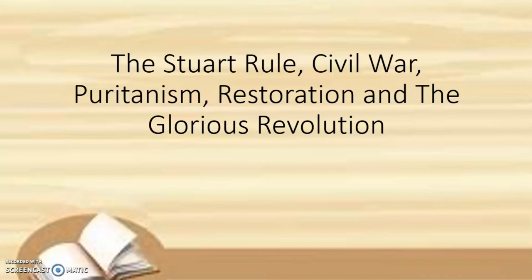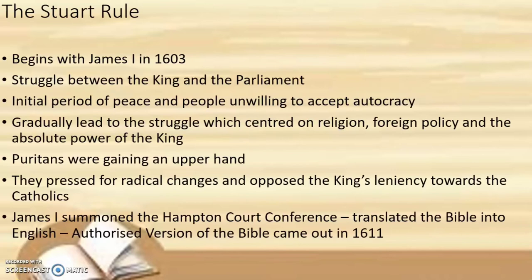The Tudor dynasty ended with the death of Queen Elizabeth on 24th March 1603. Queen Elizabeth was widely admired for her religious tolerance. Though she had her own religious beliefs and convictions, she was secular and tolerant towards other religious practices. However, she left no heir to the throne, leading to the rise of a new dynasty — the Stuarts.